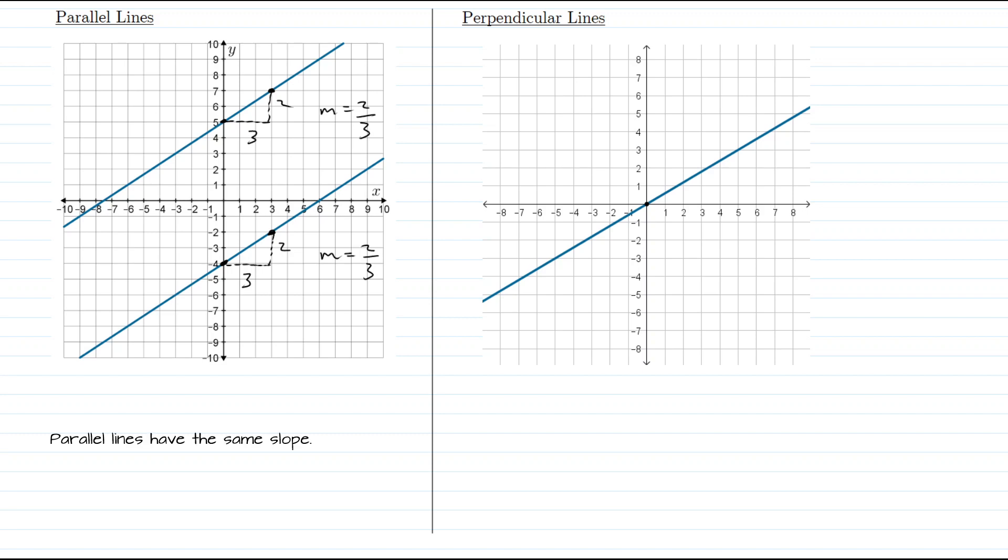Now what about perpendicular lines? We'll take a look at the graph on the right side of the screen. What would a perpendicular line look like here? One way to get that perpendicular line is to think of rotating the original blue line 90 degrees, because perpendicular really means at 90 degrees. Notice if we rotate that blue line 90 degrees, we get that red line.